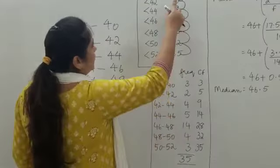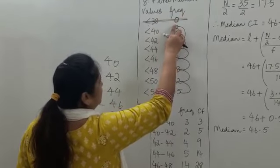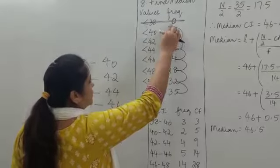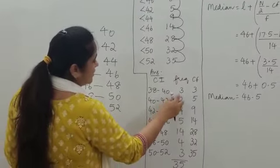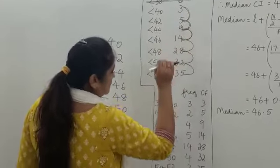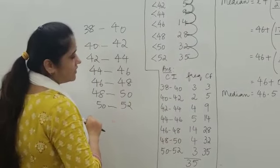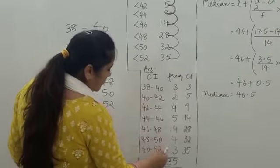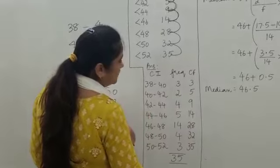So what we did was: ignore the entry with cumulative frequency 0, write the first cumulative frequency value directly as the first frequency, and then keep subtracting consecutive cumulative frequency values to find each subsequent frequency. Now, after obtaining the class intervals and frequencies, we need to create an additional cumulative frequency column.